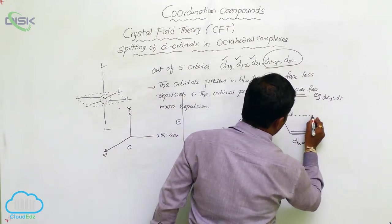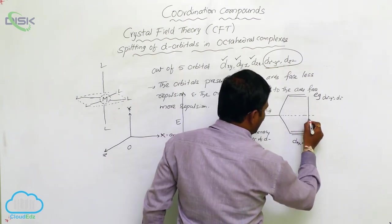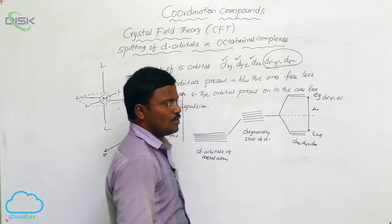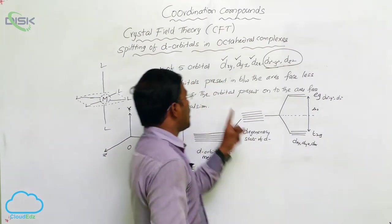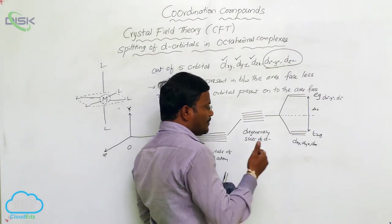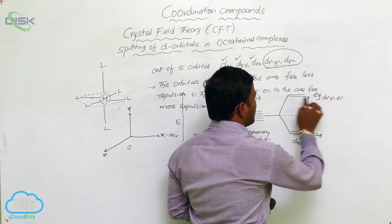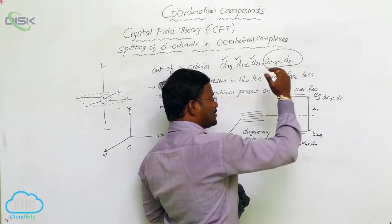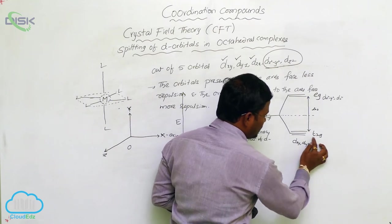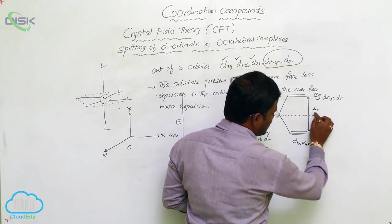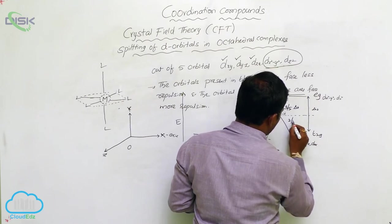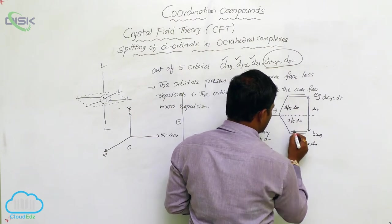This is the energy of the orbitals at degeneracy. The energy gap present between eg and T2g is represented as delta O, where delta equals the energy gap and O stands for octahedral complexes. In octahedral complexes, due to more repulsion with approaching ligands, dx²y² and dz² orbitals occupy the higher energetic eg level, while dxy, dyz, dzx orbitals reach the lower energetic T2g level. The energy difference is represented as 3/5 delta O and 2/5 delta O.